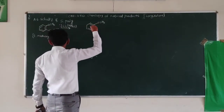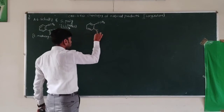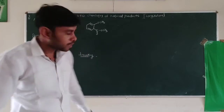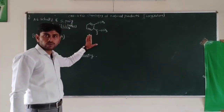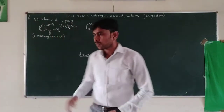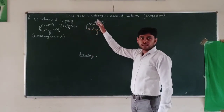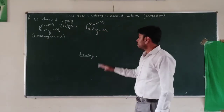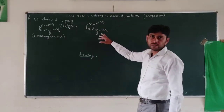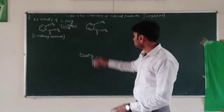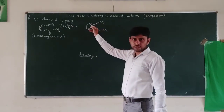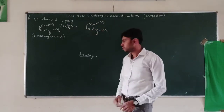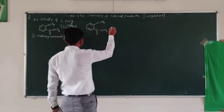So this is 1,4-reduction. The group C double bond O, OCS is an electron-withdrawing group, and the electron-withdrawing group is not in conjugation. So this follows Birch reduction as 1,4-reduction. Whenever the new double bond is coming, this double bond must be in conjugation with the donating group and must not be in conjugation with the electron-withdrawing group.